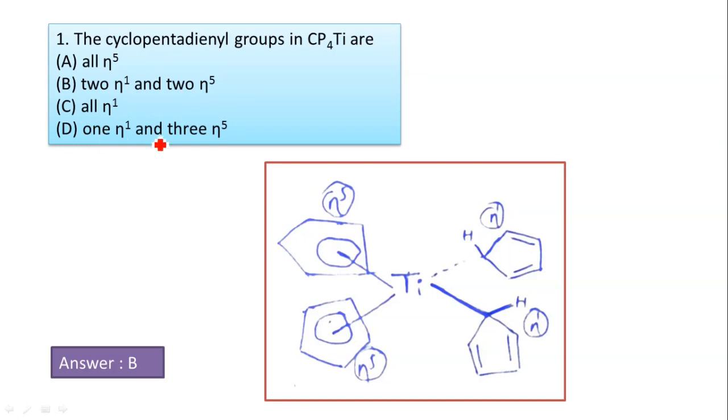Here, Ti is the titanium central metal ion. There are four CP groups. Two CP groups are attached at ring center edge, that is η1, and two bonds are attached at η5, the center of the ring. So the correct answer is two η1 and two η5, option B is correct.